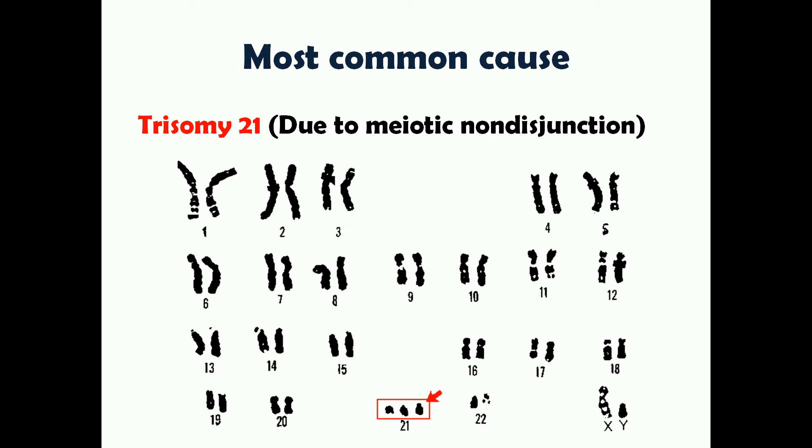In this representation you can see that on chromosome number 21 there is an additional chromosome. This occurs because of meiotic non-disjunction, which means failure of the sister chromatids to separate during meiosis. That leads to an additional 21st chromosome — trisomy 21 — and these patients will have 47 chromosomes instead of the normal 46.